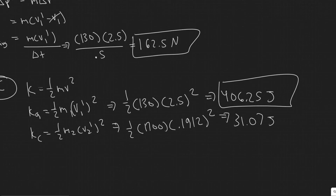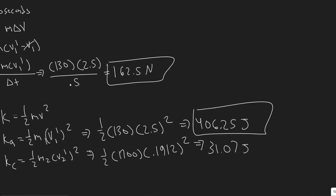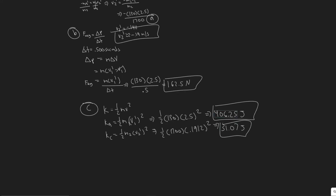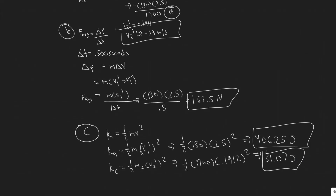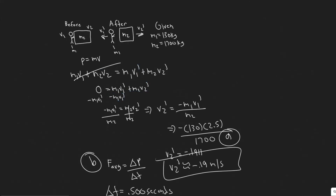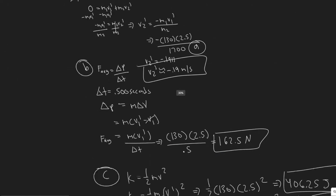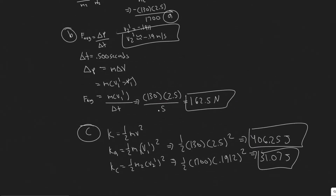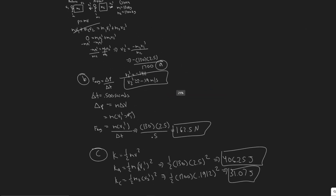Keep in mind that value was rounded, so your answer might be slightly different, but effectively the same — about 31 joules for the capsule and about 406.3 joules for the astronaut. So these are your answers to Parts A, B, and C. All we did was use the law of conservation of momentum to solve for the capsule's final velocity, then used that value in a couple of equations to solve for what they wanted. Hopefully you found this video useful.